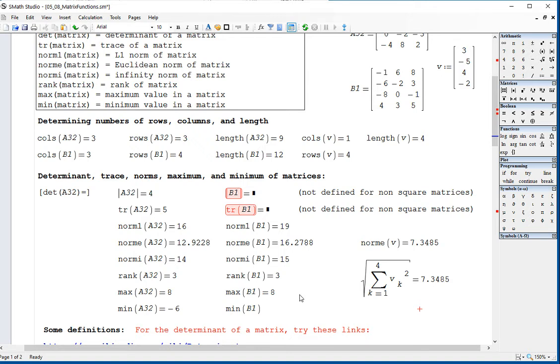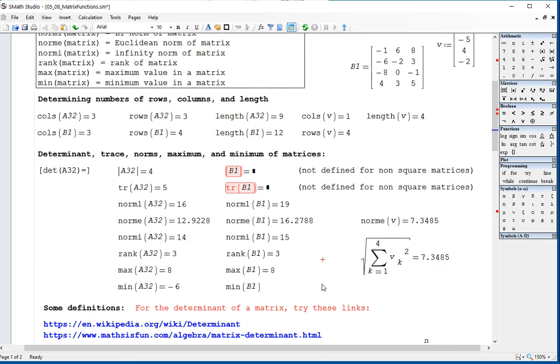Then you have the infinite norm. Again, look for that information. Also look for the information regarding the rank of a matrix. The function rank will give you the rank of a matrix. And then the functions max and min will give you the maximum and minimum value of the matrix.